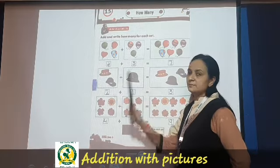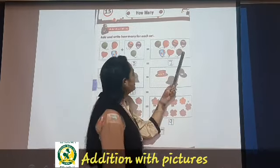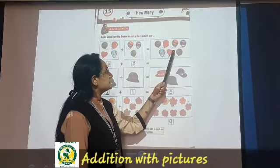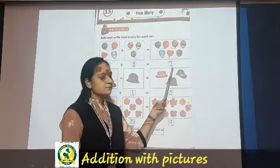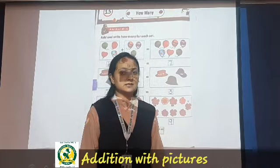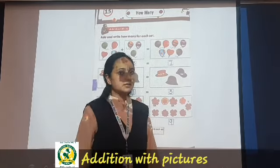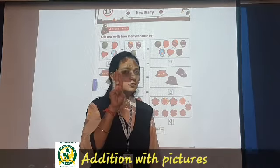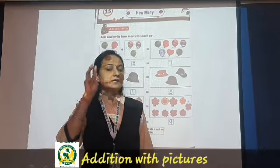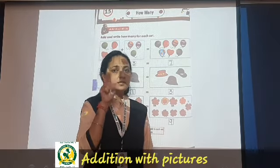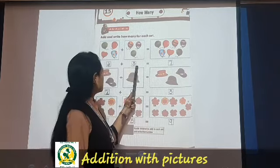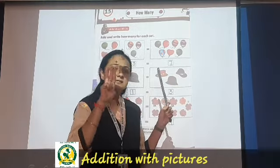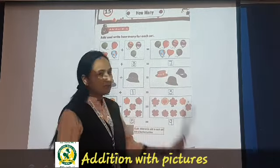So 4 plus 3. When we count: 5, 6 and 7. So here we will write 7. When we add 4 and 3 — put 4 in your mind, hold up 3 fingers. Starting from 4, count on: 5, 6, 7. So here it is 7.